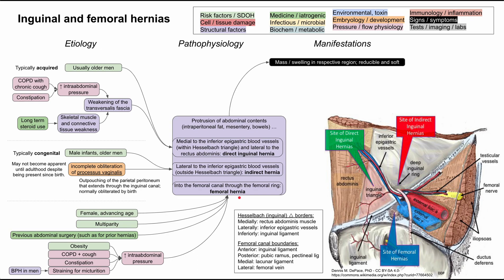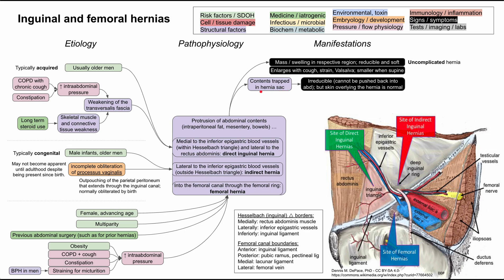Now let's look at the manifestations for these hernias, starting from least severe to most severe. In the least severe cases, you have a mass or swelling in the respective region that is typically reducible and soft. This is called an uncomplicated hernia — the swelling usually enlarges when you strain, cough, or do a Valsalva maneuver, and is smaller when you lay supine. In more severe cases, the abdominal contents can become trapped in the hernia sac, resulting in an irreducible hernia that cannot be pushed back into the abdominal cavity but has normal overlying skin — this is also called an incarcerated hernia.